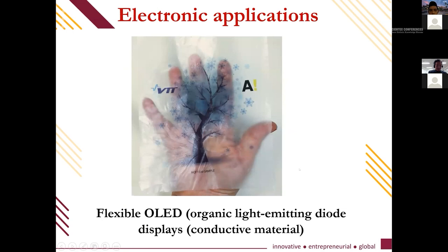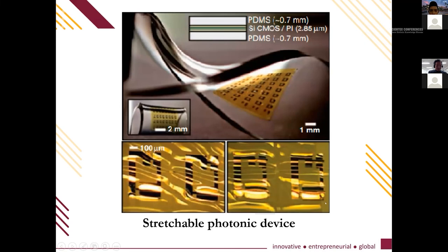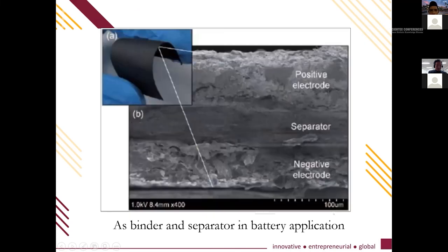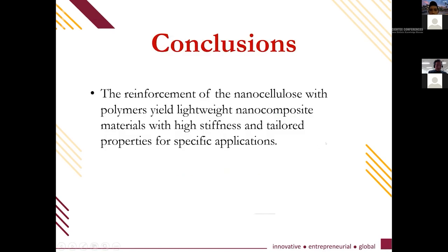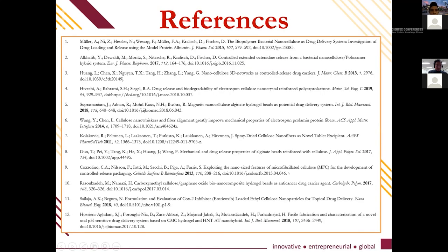In electronics applications, nanocellulose can be used for flexible displays, stretchable photonic devices, and as a binder and separator in battery applications. A portable solar cell based on foldable, lightweight, transparent conductive cellulose nanofiber paper has also been demonstrated. In conclusion, reinforcement of nanocellulose with polymers yields lightweight nanocomposites with high mechanical properties for specific applications.